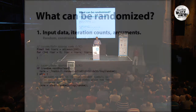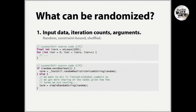What can we randomize at the unit test level? The most obvious thing is input data, iteration counts, and arguments. If you have a component that accepts a string, don't feed it just ASCII characters — feed it a random unicode sequence of characters that is valid but not obvious. If you have a component where methods can be called in arbitrary order, do call it in arbitrary order — randomize the sequence of method calls.